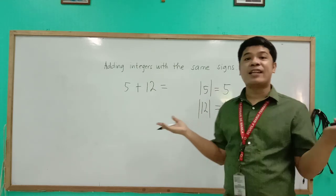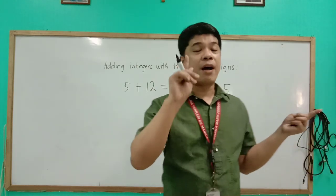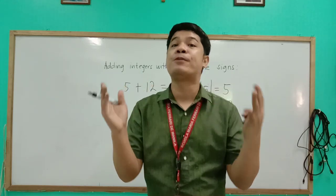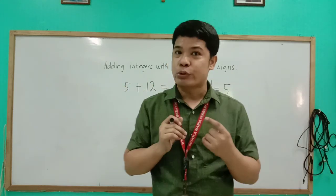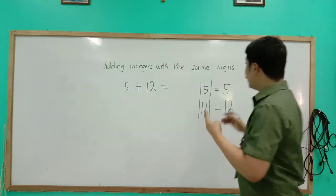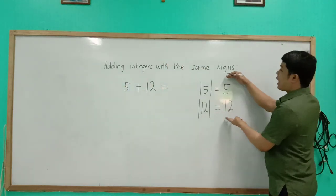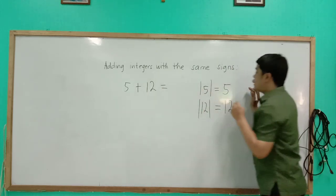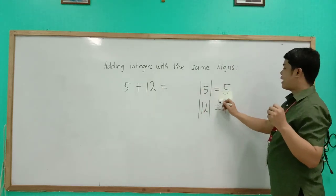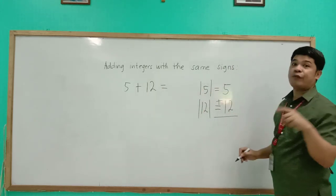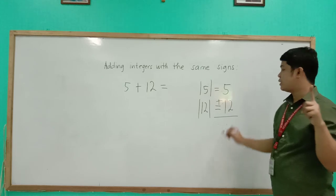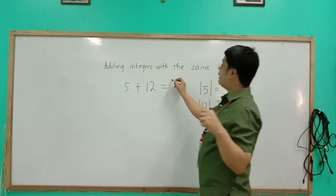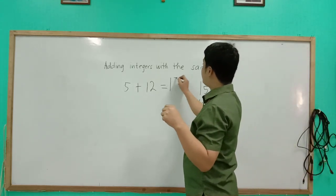Now, remember the rule is to add the absolute values. So here are the absolute values of the two integers. Let's add them: 5 plus 12 equals 17. So we will write here 17.